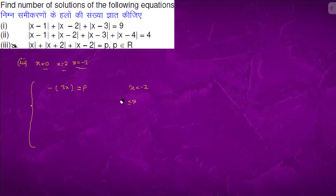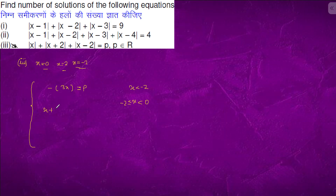Second, for x bigger than minus 2 and less than 0: on the interval bigger than minus 2, only one term will come out to be positive and the rest will come out to be negative.